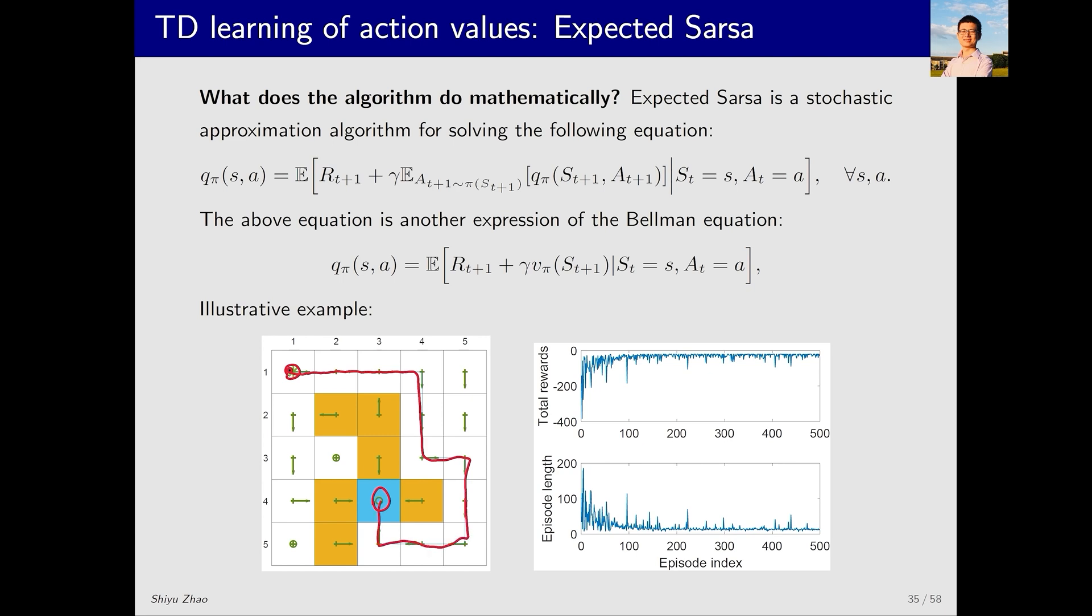In this example we only need to find a path from the starting state to the target. Although the policies for other states may not be optimal, we do not need to care. The figure on the right-hand side shows the learning process, where the total reward collected per episode increases over time and the number of steps required to reach the target decreases over time.